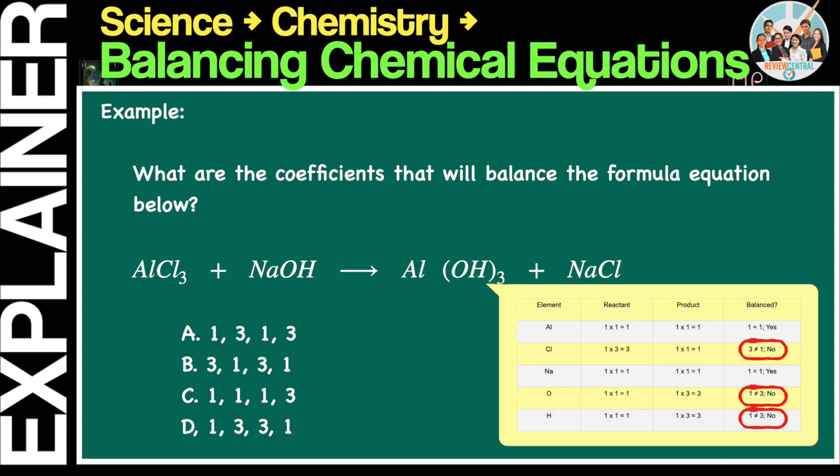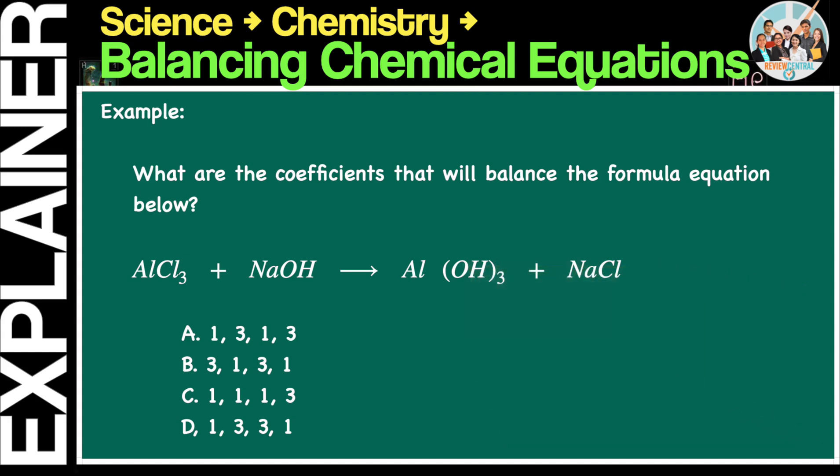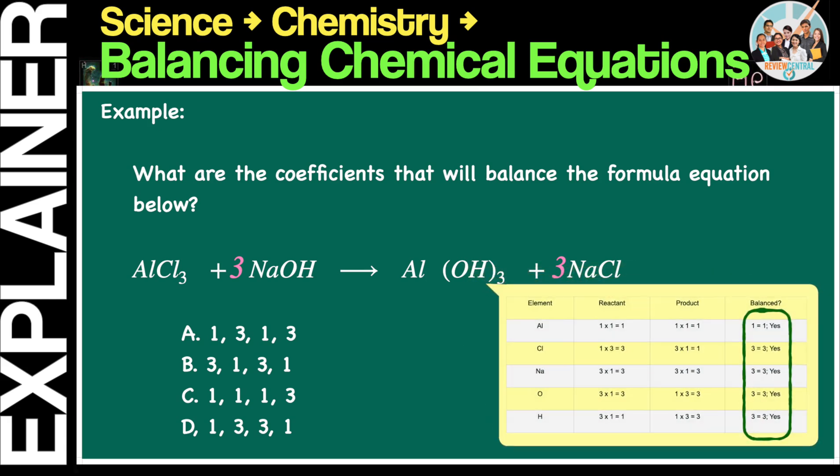To balance the equation, we insert coefficients as follows. Insert a coefficient of 3 on NaOH on the reactant side. Insert a coefficient of 3 on NaCl on the product side. Now, there are one atom of aluminum, three atoms of chlorine, three atoms of sodium, three atoms of oxygen, and three atoms of hydrogen on both sides. Let's again summarize these using a table, as shown. The chemical equation is now balanced. Therefore, the coefficients we are looking for are 1, 3, 1, and 3. The correct answer is A.